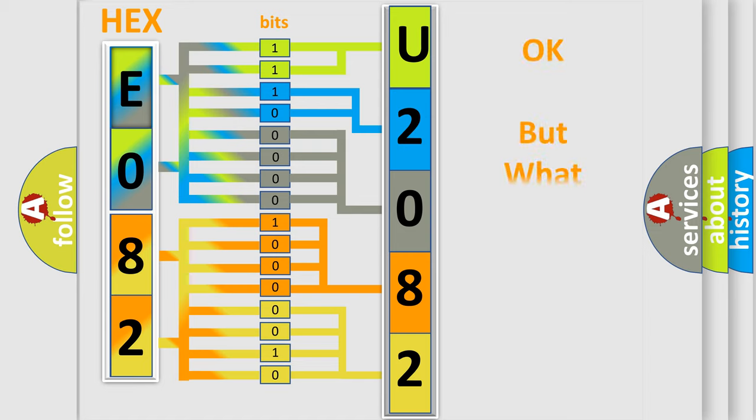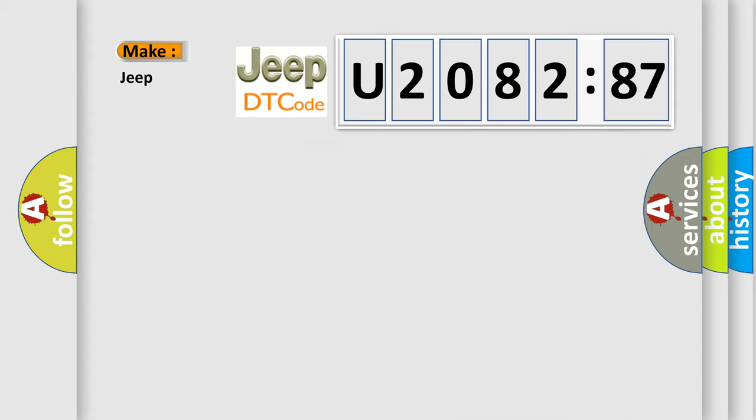We now know in what way the diagnostic tool translates the received information into a more comprehensible format. The number itself does not make sense to us if we cannot assign information about what it actually expresses. So, what does the diagnostic trouble code U208287 interpret specifically for Jeep car manufacturers?